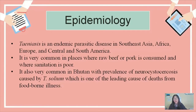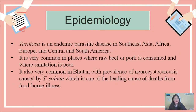Now moving to the epidemiology. Teniasis is endemic in Southeast Asia, Africa, Europe, Central and South America. It is very common in places where raw beef or pork is consumed and where sanitation is poor. It is also very common in Bhutan with prevalence of neural cysticercosis caused by Tenia solium, which is one of the leading causes of deaths from food-borne illness.